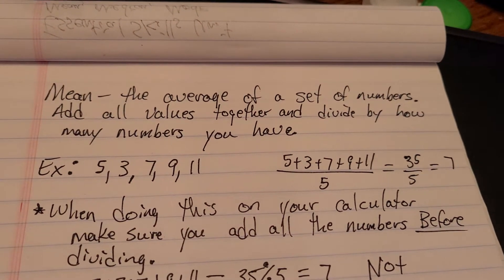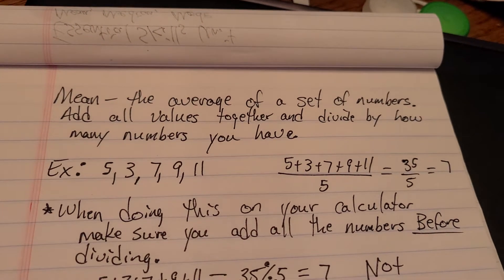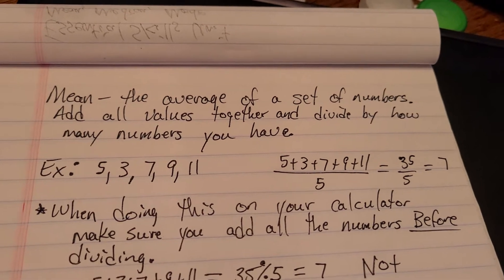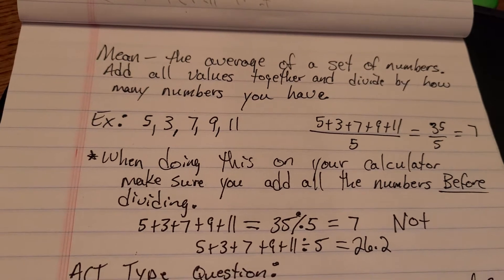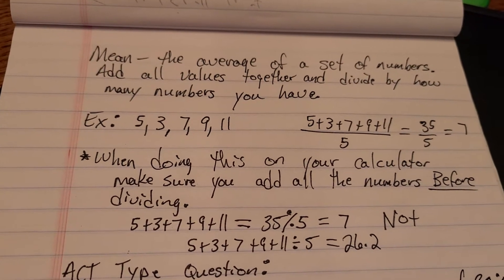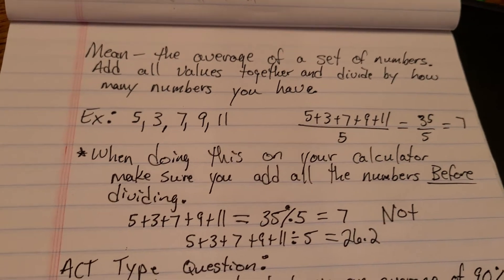When you're doing the average, you don't have to worry about putting them in order or lining them up or anything like that. Just add them all together. One thing you do need to be careful with is when you're doing this on your calculator, make sure that you add all the numbers before you divide.